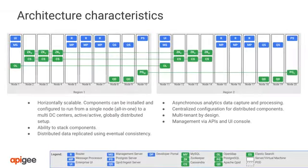A typical Apigee Edge topology looks like this. By typical, I mean the placement of components across nodes, not necessarily the number of nodes. Let's explore the diagram from left to right. Node 1 shows three components: UI, management server, and OpenLDAP. These components are all associated with management functions, and it makes sense for them to be together on the same node. In this two-region topology, we illustrate high availability for management functions, represented on node 11. Each planet only needs one management server, but having two or more is possible, driven by availability and resiliency requirements.